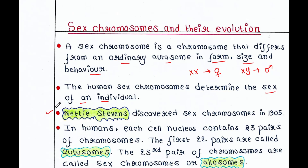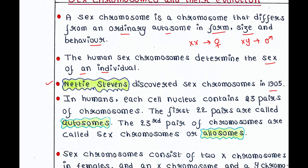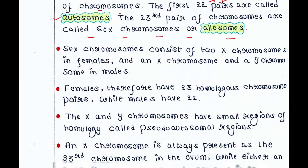Nettie Stevens discovered sex chromosomes in 1905. In humans, each cell nucleus contains 23 pairs of chromosomes — 46 chromosomes in total. The first 22 pairs, that is the first 44 chromosomes, are called autosomes, and the 23rd pair of chromosomes are called sex chromosomes, or allosomes.